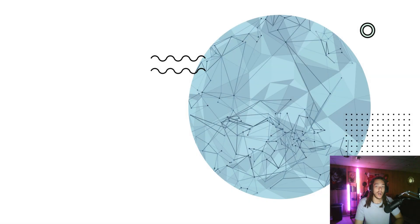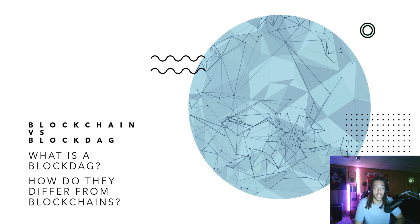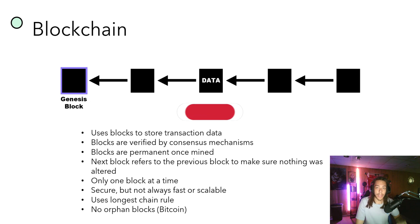We're going to start off with the main question: what is a BlockDAG? BlockDAGs are relatively new when it comes to crypto technology. There are a lot of questions around them — how do they differ from blockchains, do they have advantages over blockchain, what are the disadvantages? We're going to start with blockchain. If you look at this diagram, you can see blocks stored with data, each referring back to the previous block all the way back to the genesis block, creating a blockchain. Blocks are verified by a consensus mechanism like proof of work or proof of stake.